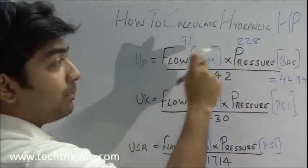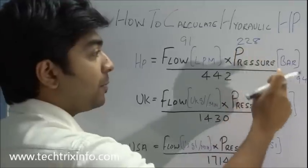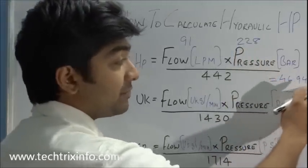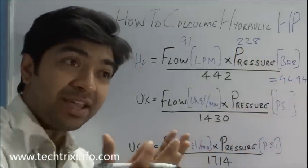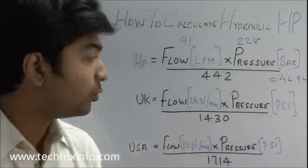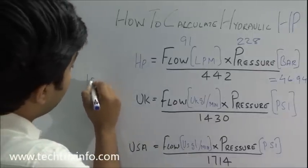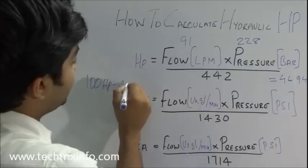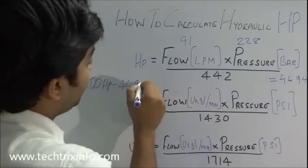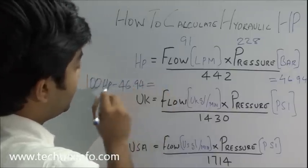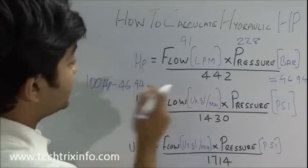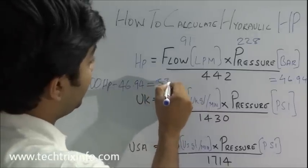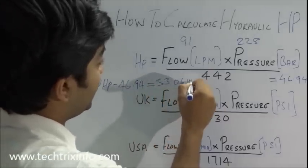So say if we have an engine or a drive mover which has 100 HP, so hydraulic HP is 46.94, the balance what we have is 53.06 HP.